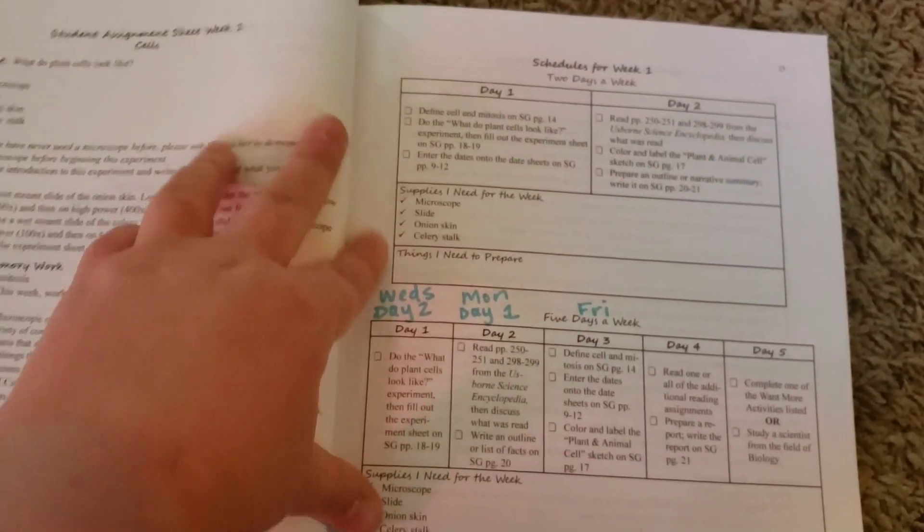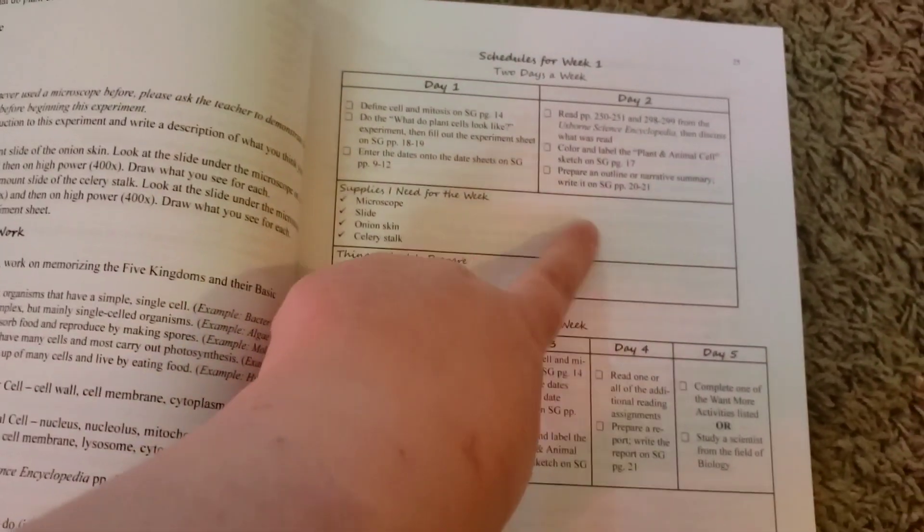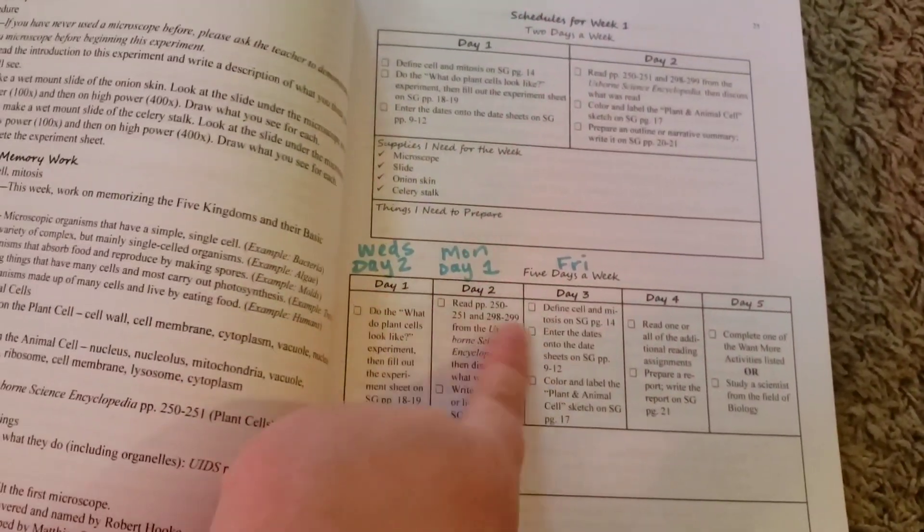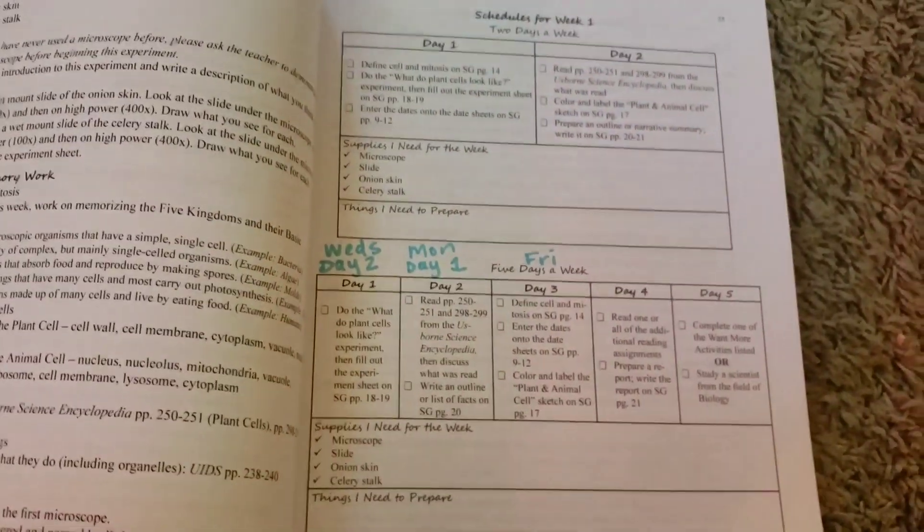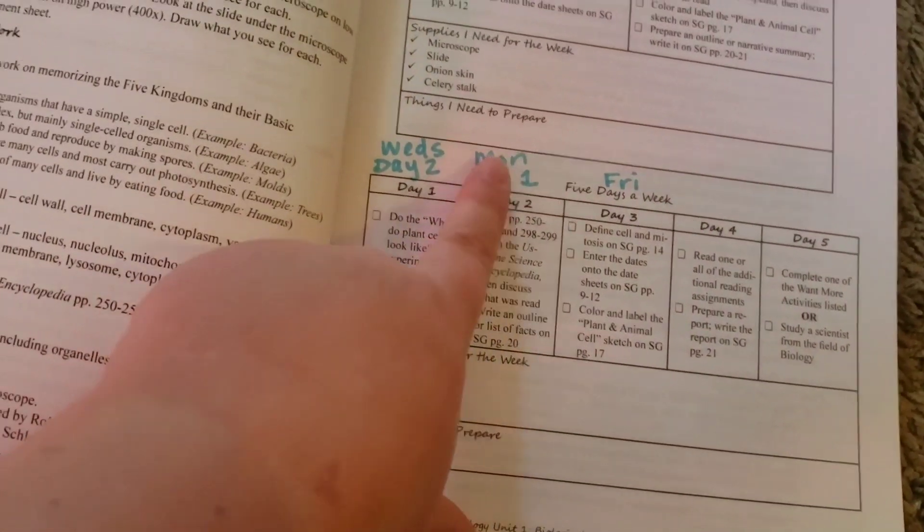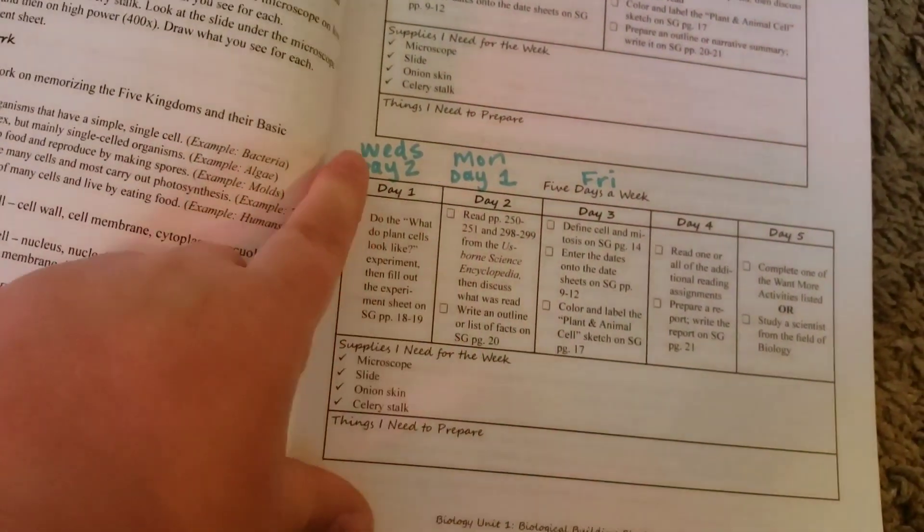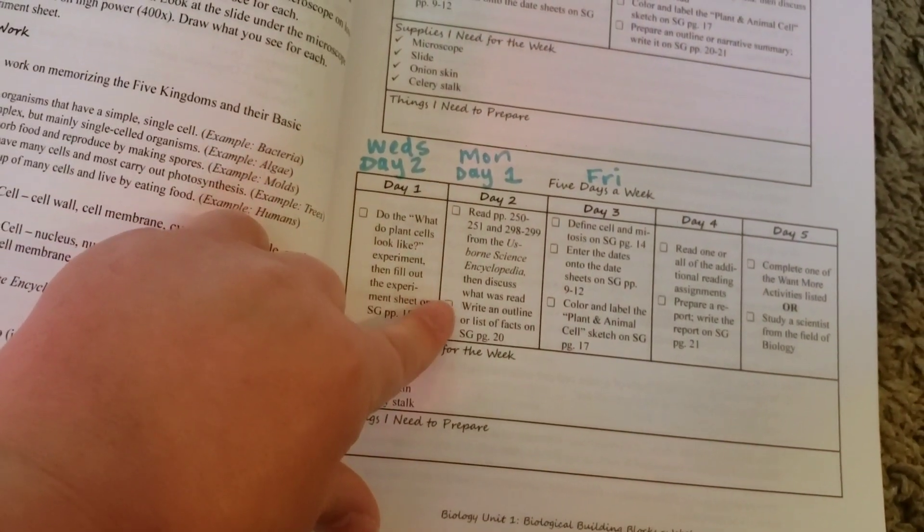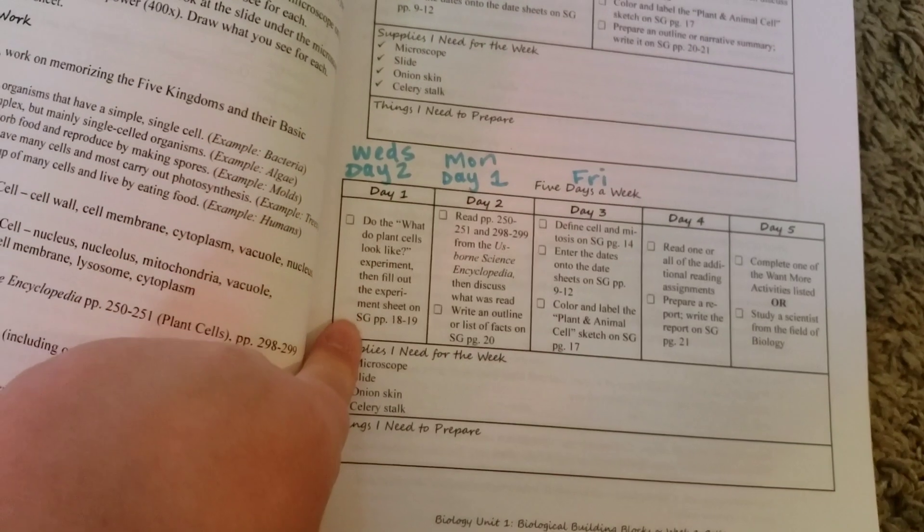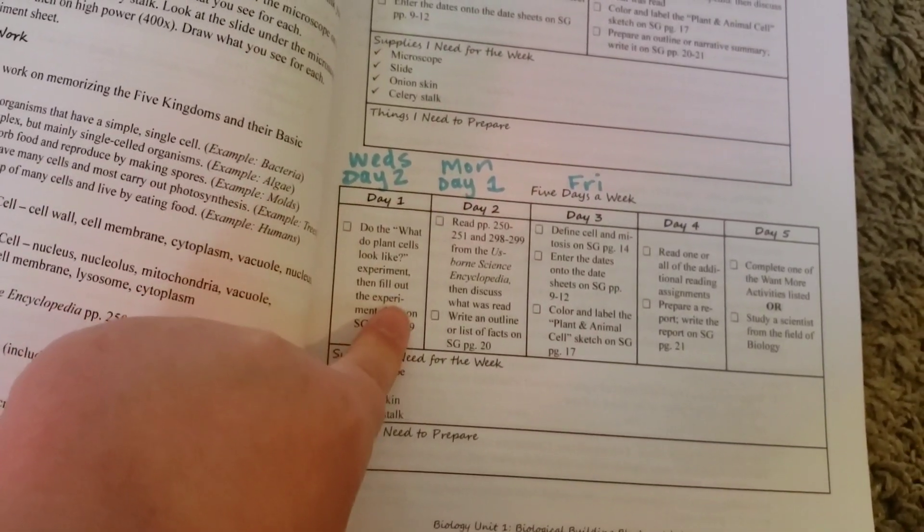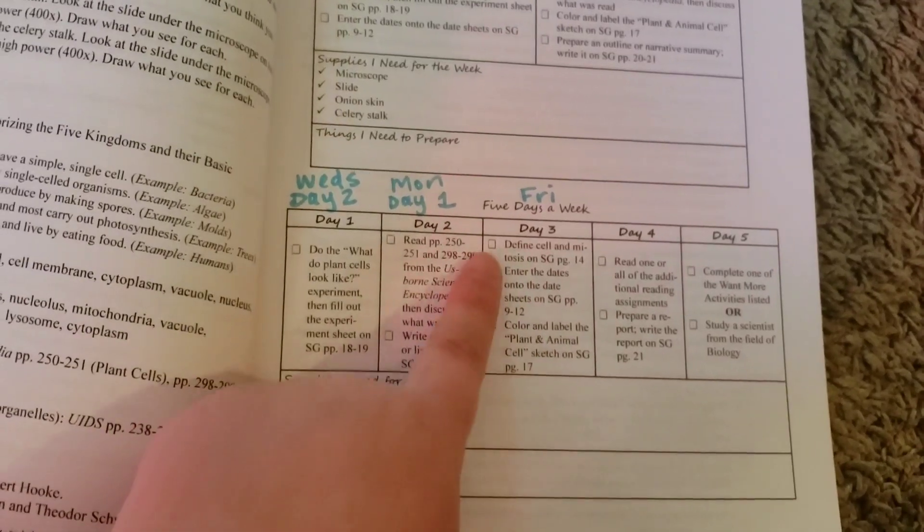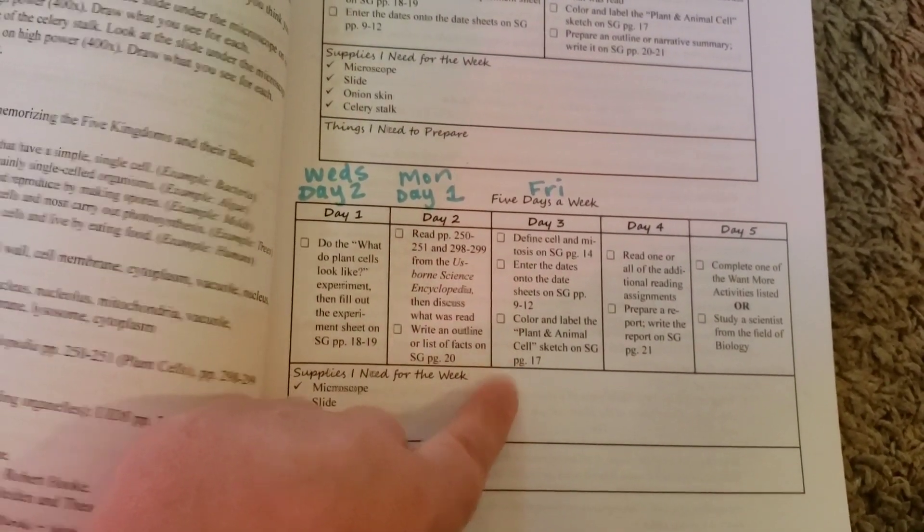And then another really cool thing about this program is you can either do a two-day schedule or there's a five-day schedule. I'm actually going to do a three-day schedule because we want to do science three days a week. So I've broken it up to where we will do this on day one, which consists of our reading and discussion and that kind of thing. And then on day two, we will do the experiment. And then on day three, he'll do the vocabulary and things like that.